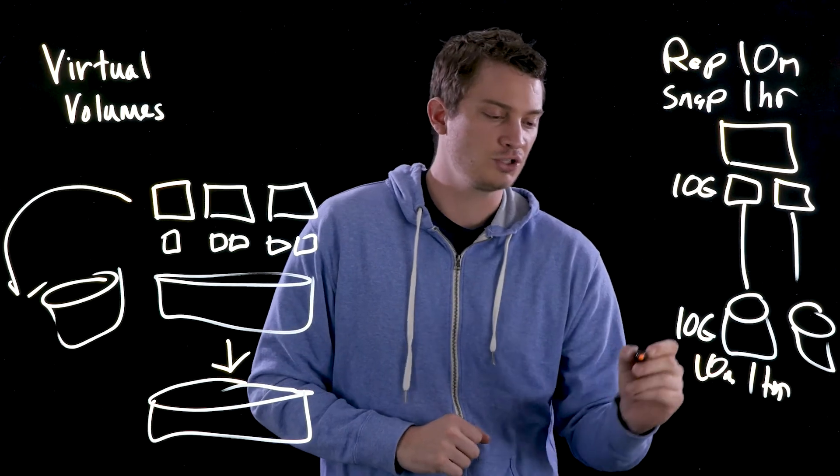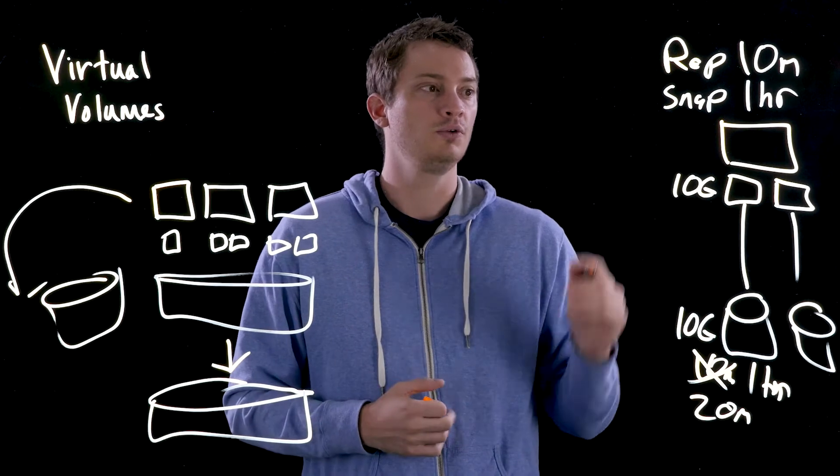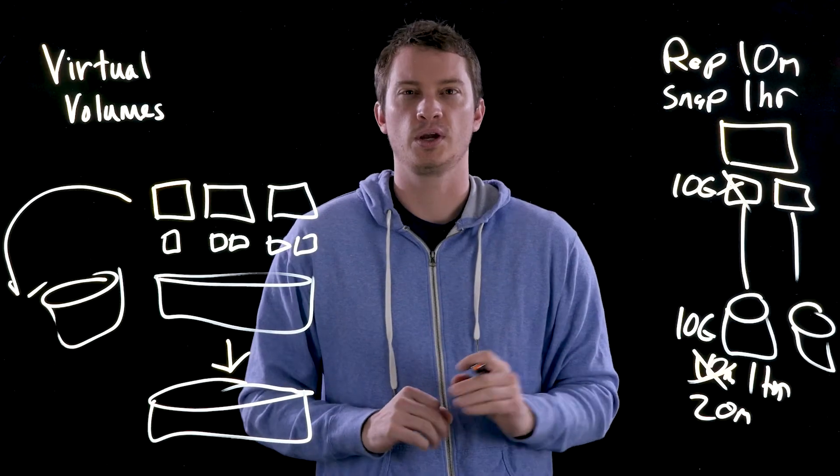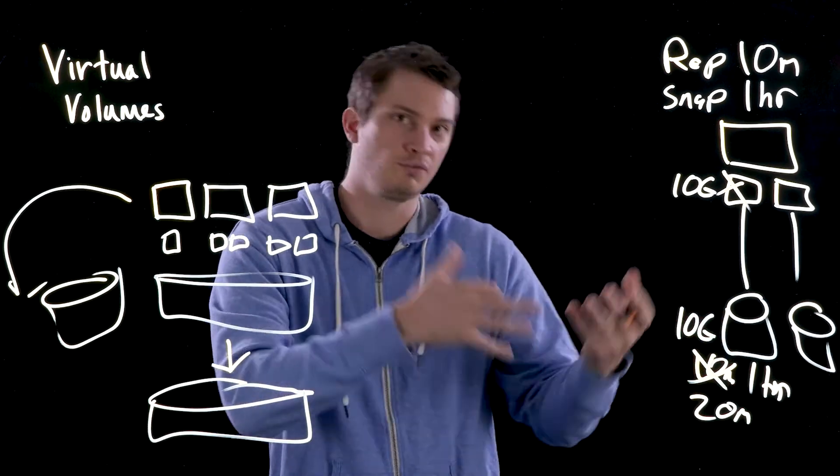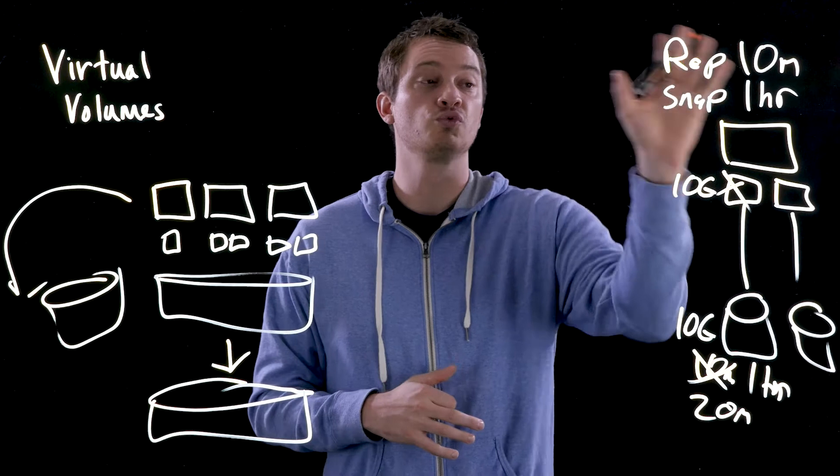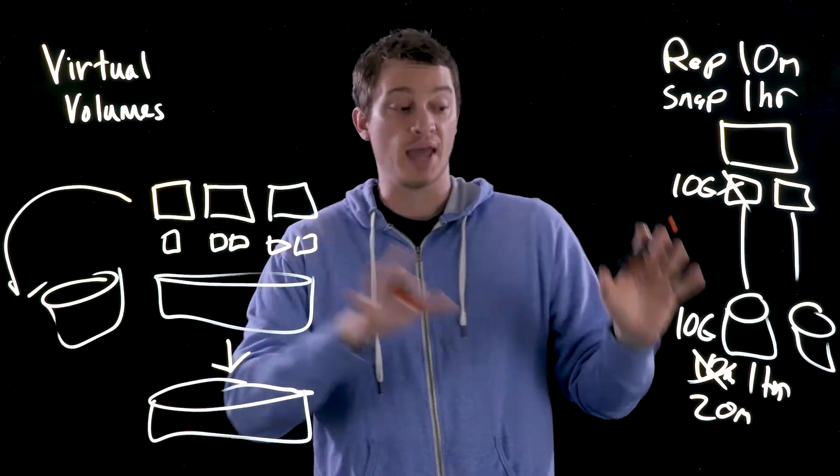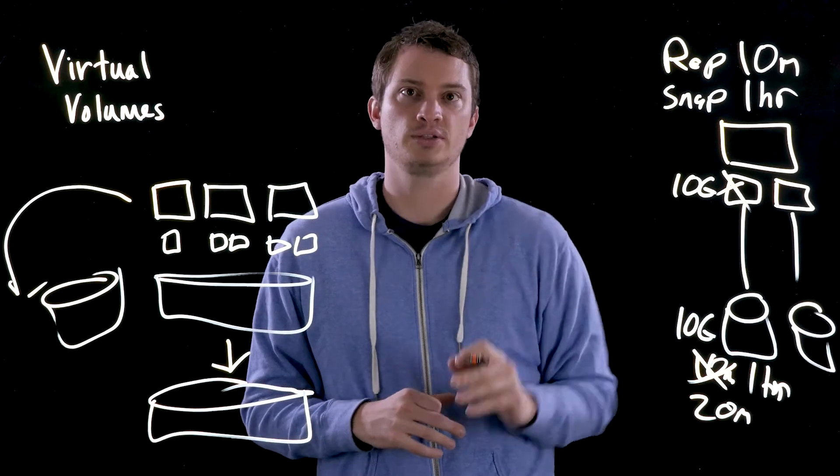And it'll make sure these volumes are configured to that policy. And if someone goes and changes this from 10 minutes to 20 on the array somehow manually, VMware knows about it and marks this as non-compliant. Someone's screwed with the configuration. You either go back to the array and fix it, or you can rerun this VM through the provisioning wizard inside of VMware. Now that this has changed, here are your options to make sure that this SLA is satisfied.